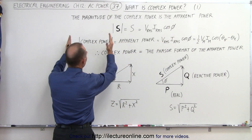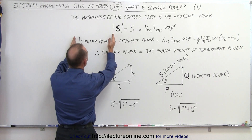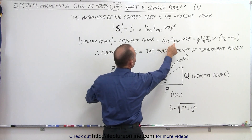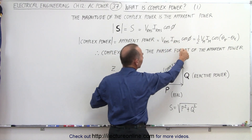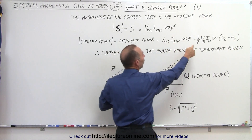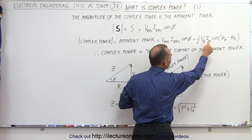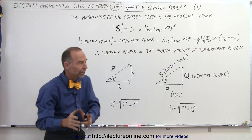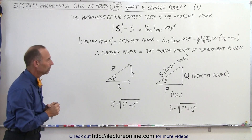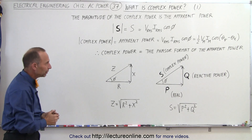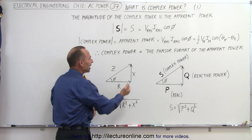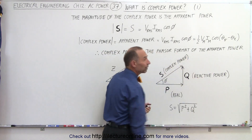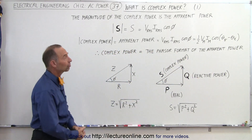So the absolute value, or the magnitude of the complex power, is equal to the apparent power, which is V-RMS times I-RMS times the cosine of the phase angle, or one-half the maximum voltage times the maximum current times the cosine of the difference of the phase angles of the voltage and the current. So how do we define complex power? We can define it by saying that it's the phasor format of the apparent power, and that's a good way to describe it.